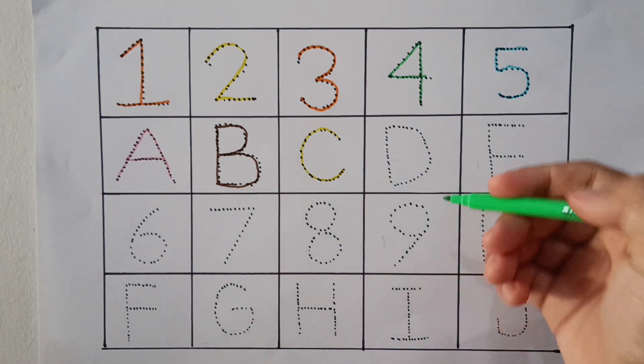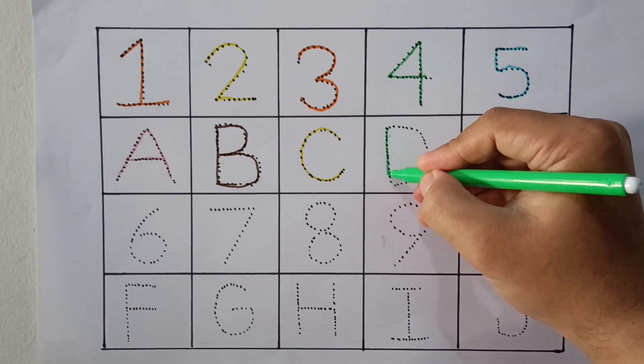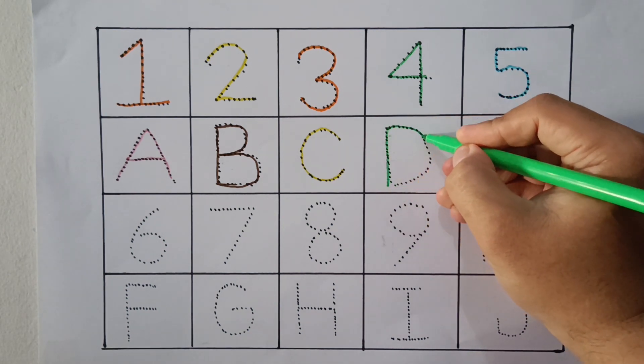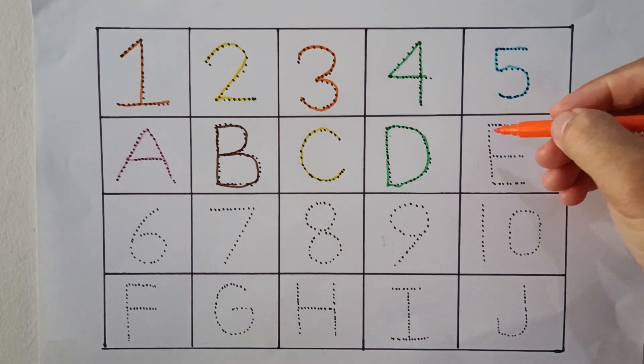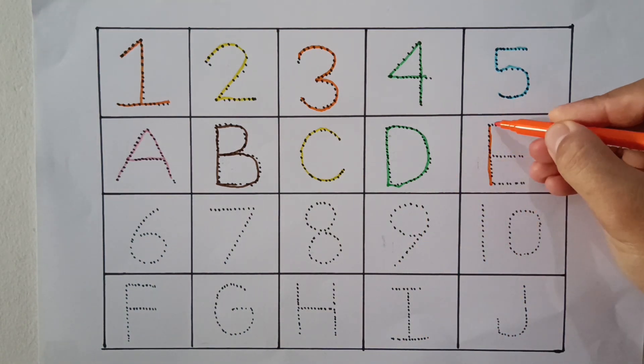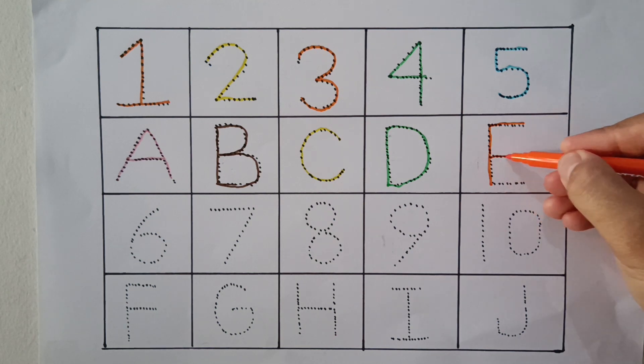Green color D, D for Dog. Orange color E, E for Elephant.